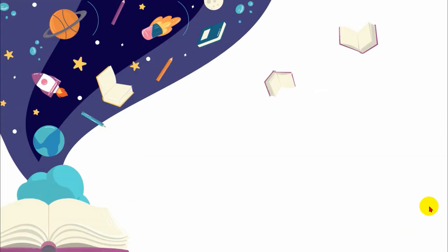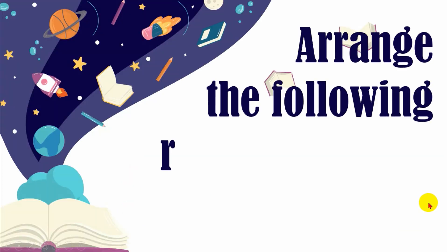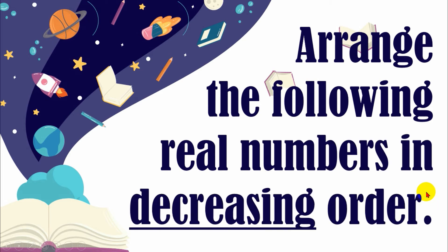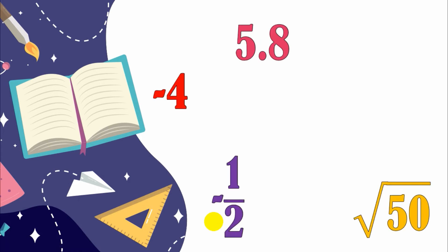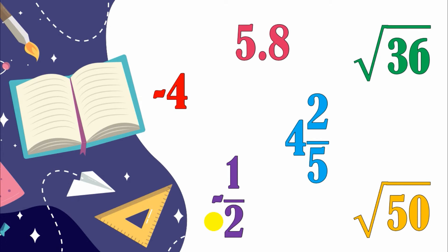Next, arrange the following real numbers in decreasing order. This time we go from highest to lowest — we put the greatest first and the least last. I have here the following numbers. Arrange all of these real numbers into decreasing order.